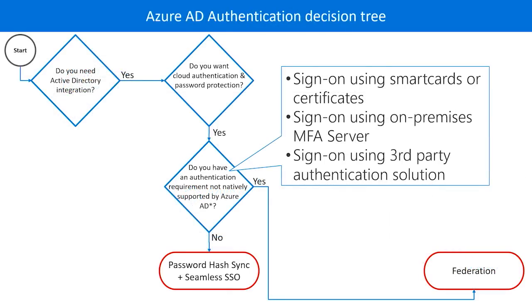Some organizations may require an authentication feature not currently supported by Azure AD — for example, signing in with smart card authentication or using an on-premises MFA server. In this case, organizations may choose to use federation. Keep in mind that Azure AD evolves pretty quickly and we add features all the time, so make sure to check the latest documentation before you make your decision.